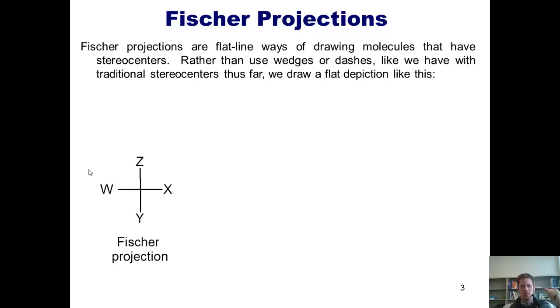Here's the answer. Whenever you see a Fischer projection like the one drawn here, what it's trying to tell you is that the two groups, W and X, that are drawn horizontally are coming towards us three-dimensionally. And the two groups, Z and Y, which are drawn vertically, are going away from us three-dimensionally. Thus, when we see a Fischer projection drawn like this, what it really is depicting, or trying to tell us, is this.